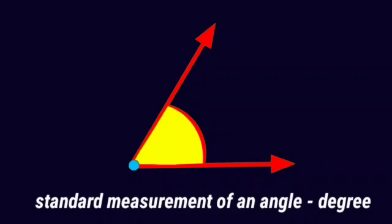Standard measurement of an angle is degree. Tiny zero on top right of a number represents degree. And there are seven types of angles based on degree.